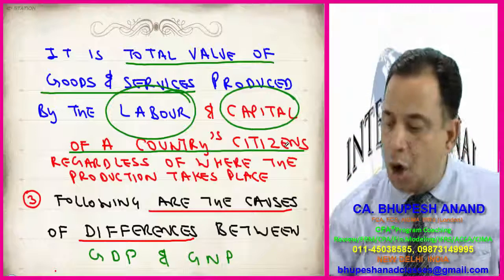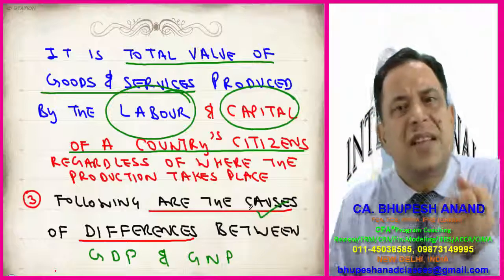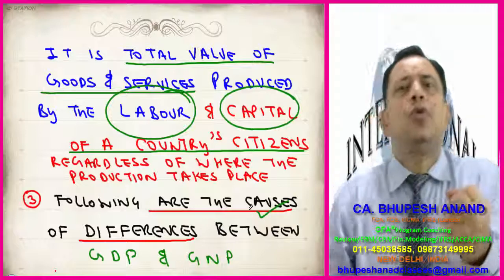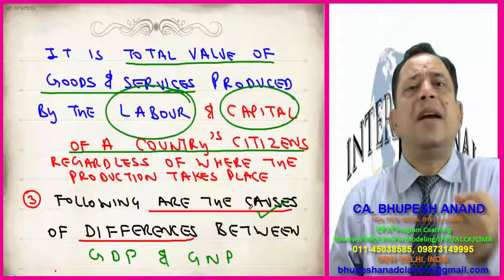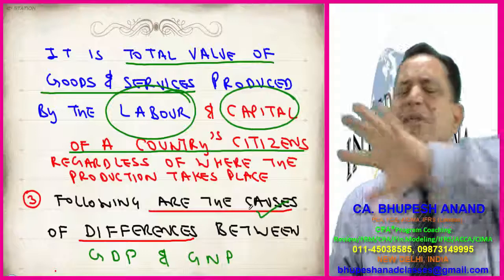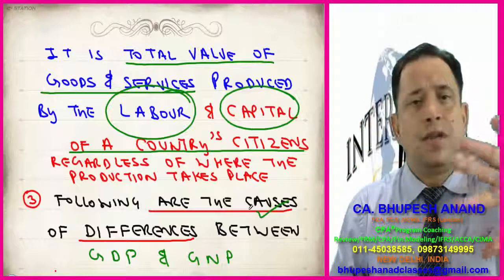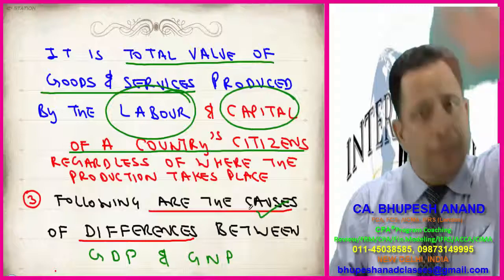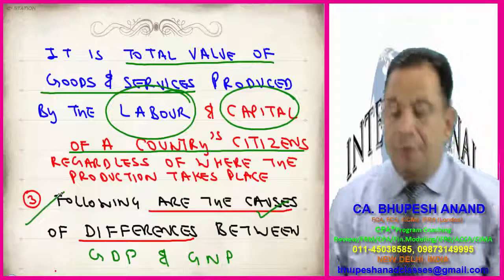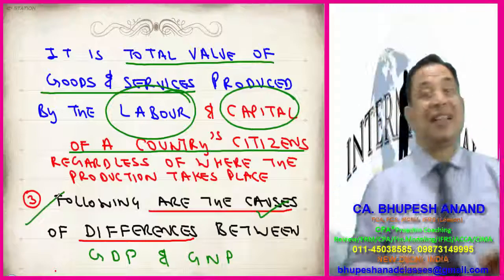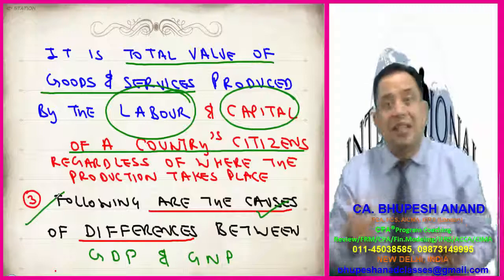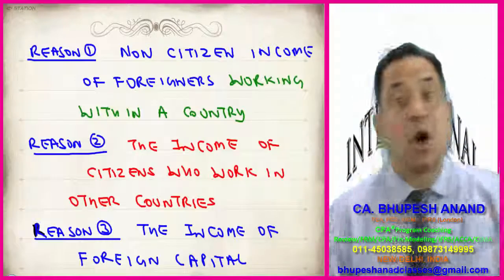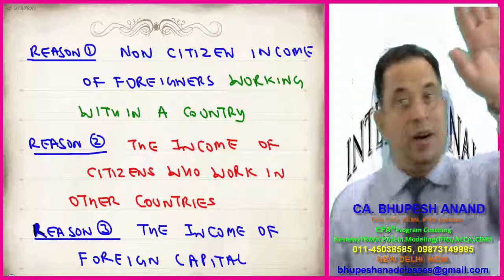Following are the reasons for the difference between Gross Domestic Product and Gross National Product. These are very simple, very intuitive, and easy to understand. Please write down the third point: following are the reasons for the difference between GDP and GNP. There are four differences. It is due to labor and it is due to capital.